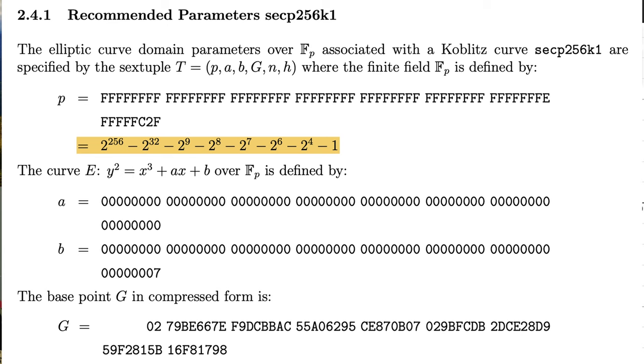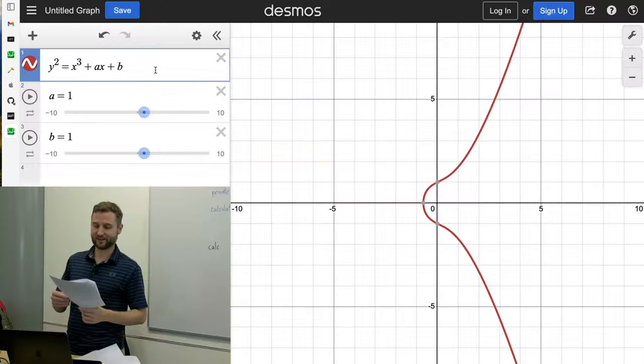For example, p, the big prime number, I find this stuff kind of interesting. So the prime number is 2 to the 256, which obviously by itself is the power of 2, so that's not a prime number. And then we're kind of like subtracting various powers of 2. Minus 2 to the 32, minus 2 to the 9, all the way down to minus 1. And that is going to be the prime that we start with.